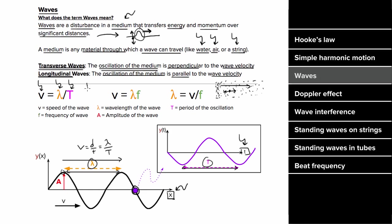Since one over the period equals the frequency, we can rewrite the speed formula as: speed of a wave equals wavelength times frequency. On the AP exam formula sheet, it's written as wavelength equals speed divided by frequency. Increasing the frequency will cause the wavelength to decrease, but the speed remains constant. The only way to change the speed of a wave is to change the properties of the medium itself.